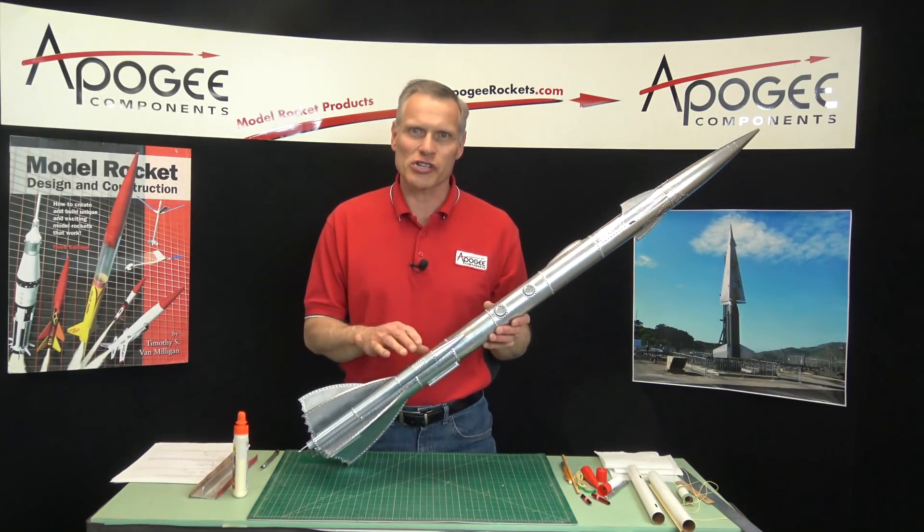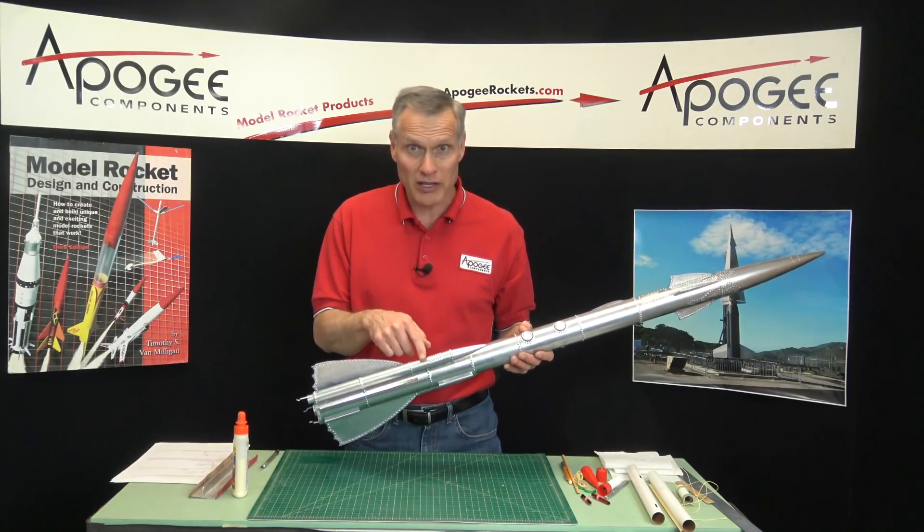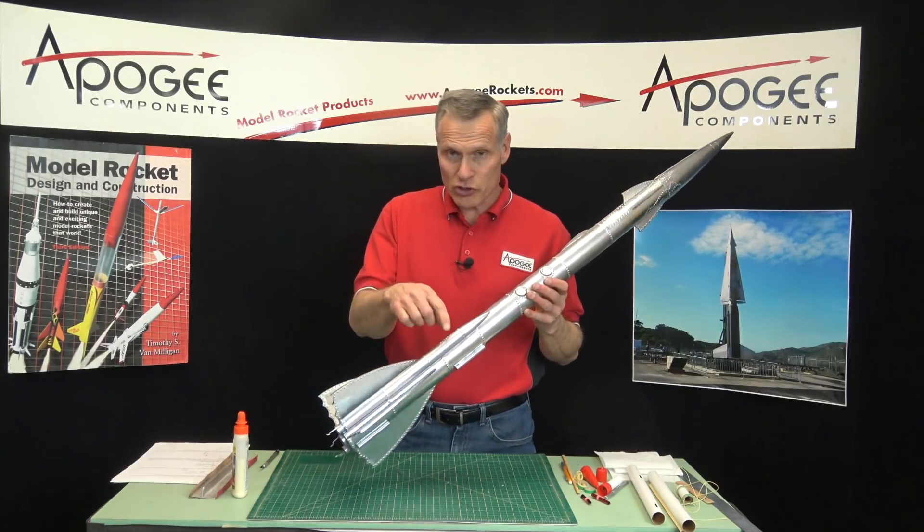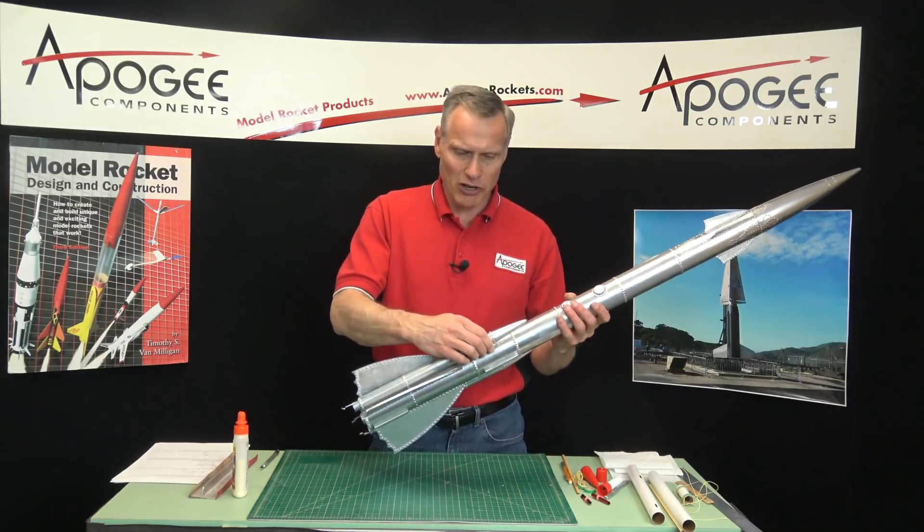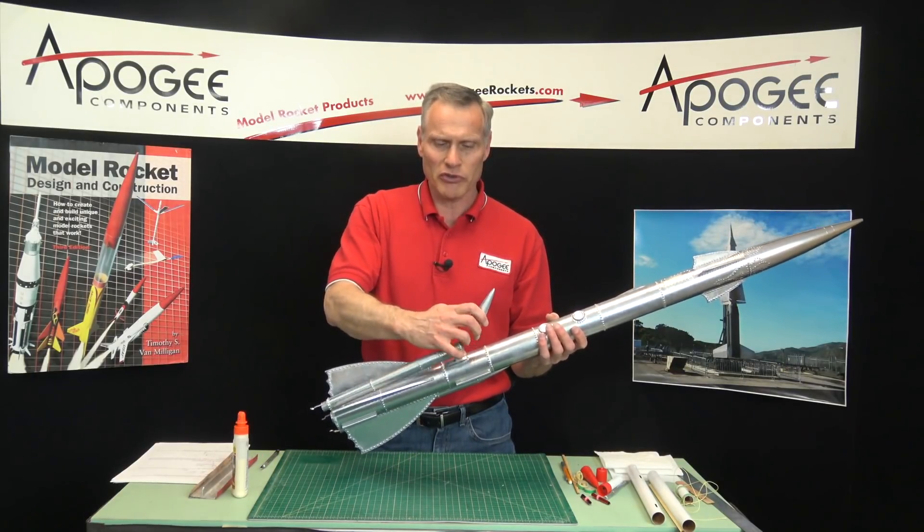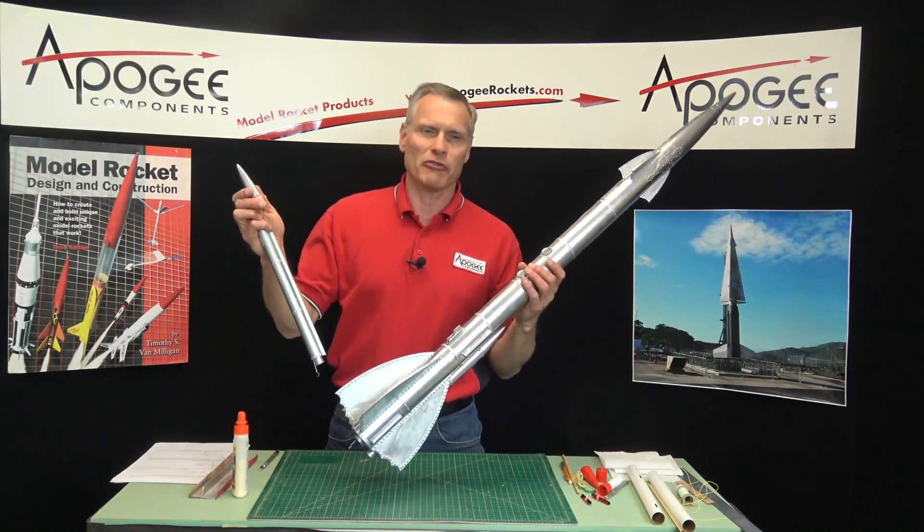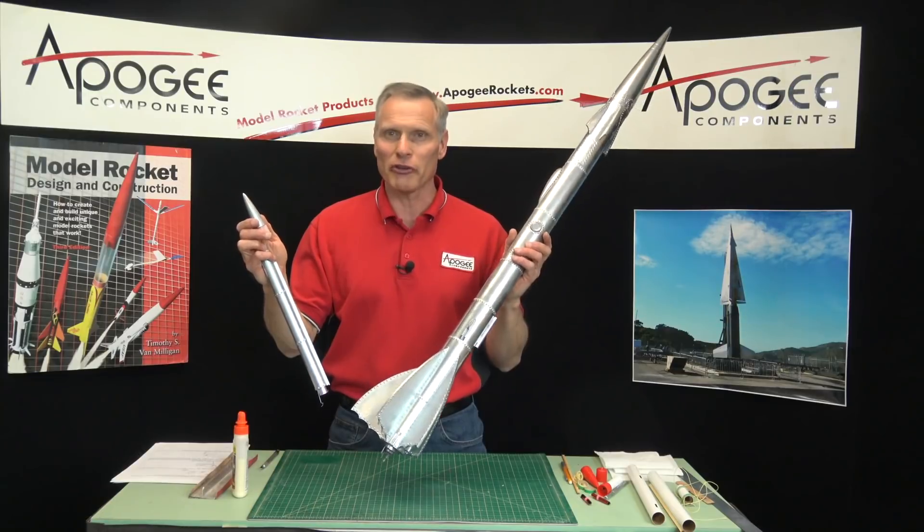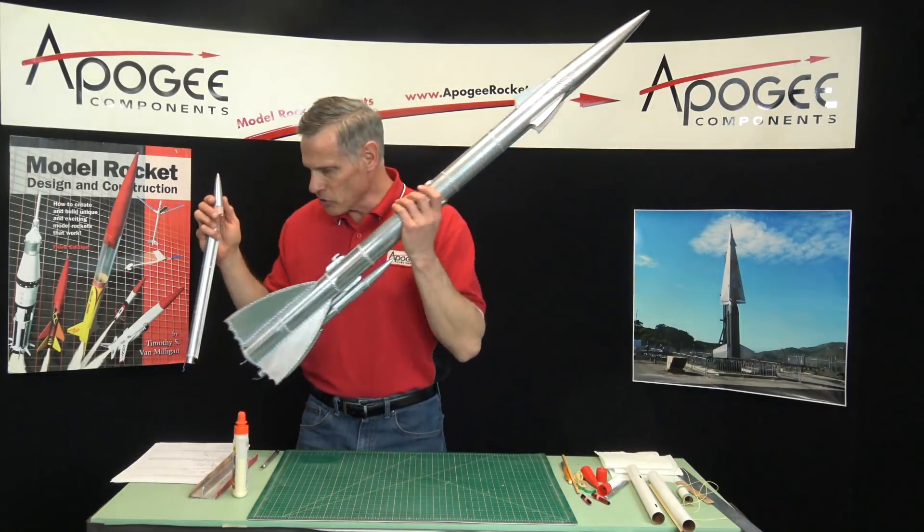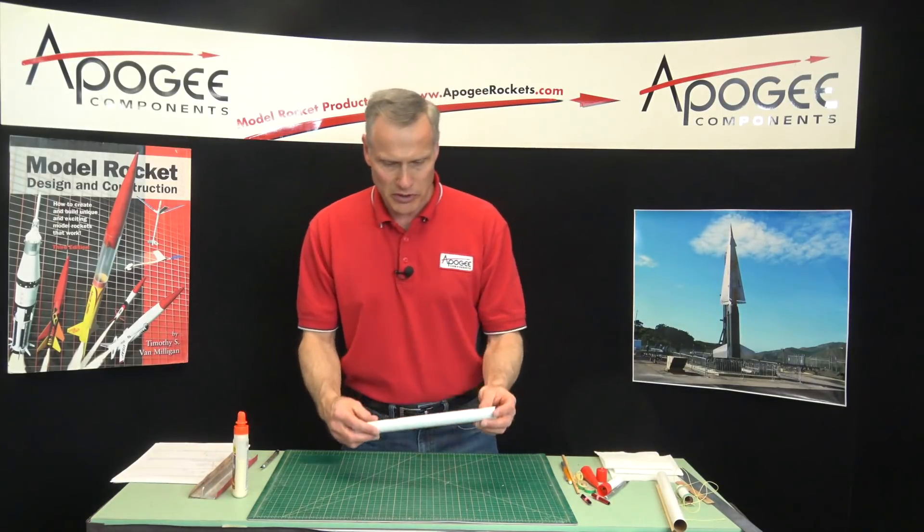In this step in the construction of the flying machine, we're going to build the strap-on booster pods which are shown here. These are designed to fall off, so they're rigid on the rocket until the nose cone comes off. Once the nose cone comes off, they come flying off and have a very cool effect in the sky. So I'm going to show you how to build those.